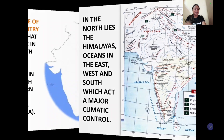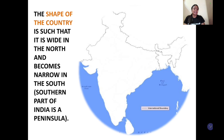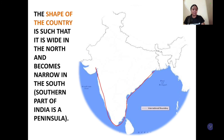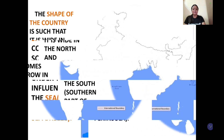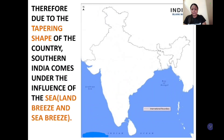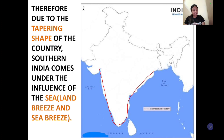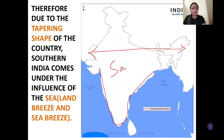So I hope children ye clear hai. Aage dekhte hain — you can see the shape of the subcontinent. South India kaafi narrow ho jaata hai, iske kaaran bhi ye ocean ke influence mein zyada aata hai, aur yahan ka temperature equable rehta hai. So children, we have already discussed ki kaise South India ka shape ocean ke influence mein aa jaata hai — because of its narrow shape. North mein jo hai kaafi wide hai, jabki south mein wo kaafi narrow ho jaata hai, isliye it comes under the influence of sea breeze and land breeze.